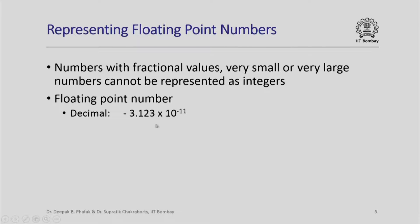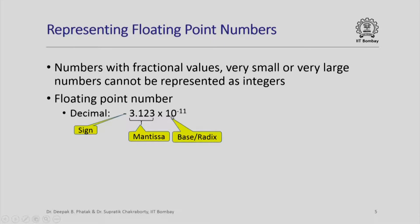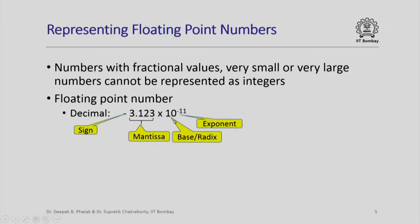Let us look at this floating point number: minus 3.123 times 10 raised to –11. This number is written in decimal and in this representation there are several parts. The first is the sign, which is negative. Then we have 3.123 which is also called the mantissa, then we have the base which is 10, and finally we have the exponent which is –11. There is nothing sacrosanct about representing floating point numbers in decimal notation — we could also use binary notation where the mantissa and exponent would be binary representations and the base would be 2.